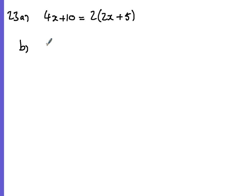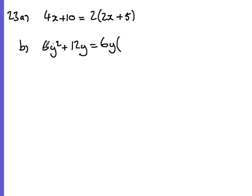Part b: factorize fully — 6y² + 12y. The biggest number that goes into both 6 and 12 is 6, and we can also take a y out because we have y² and y. So: 6 times what gives 6y²? That's y. Then y times what gives y²? Just y. Plus 6y times what gives 12y? That's 2. So the answer is 6y(y + 2).